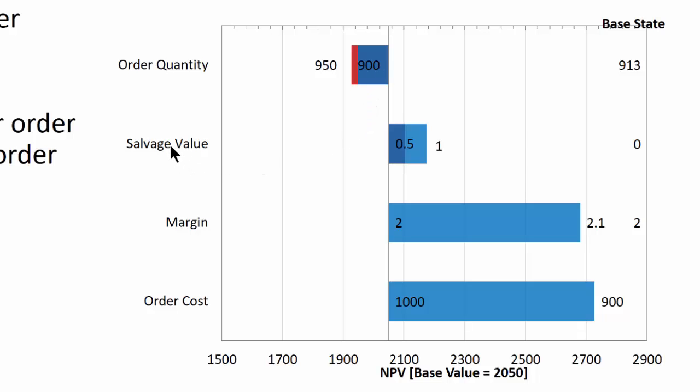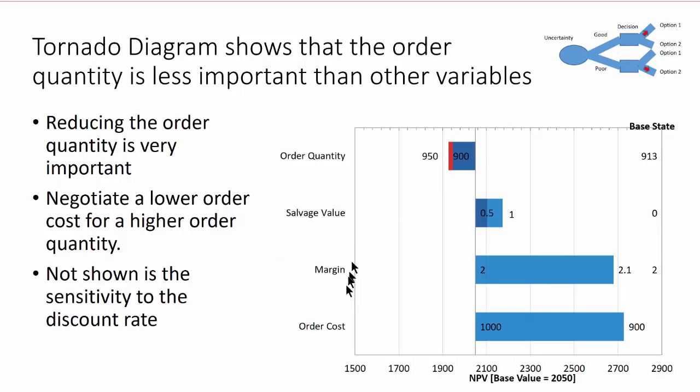Similarly, for salvage value, let's assume that 10 years hence, I could sell any leftover inventory at 50% of the acquisition cost or 100%. You can see that would increase my NPV a little bit. But the big hitters are the margin. We've assumed $2 margin on our units. If we could just increase that by 10% to $2.10, look at how much NPV we gain. Or if we could change the order cost from 1,000 to 900, look at the NPV we could gain. So what this tells me is since we're not very sensitive to this order quantity, what we might want to do is to negotiate a lower order cost for a higher order quantity.